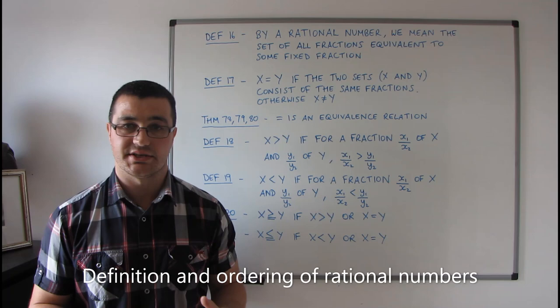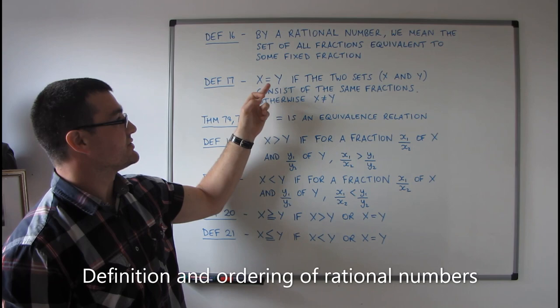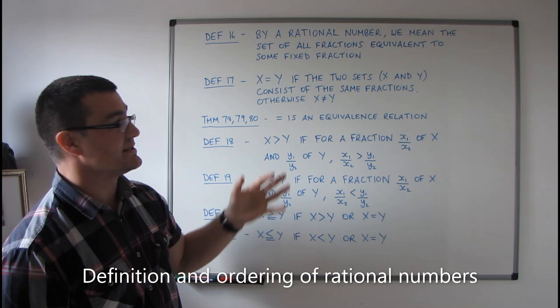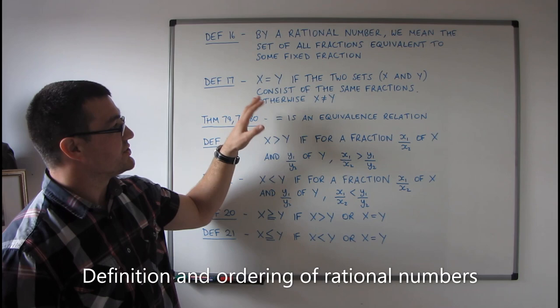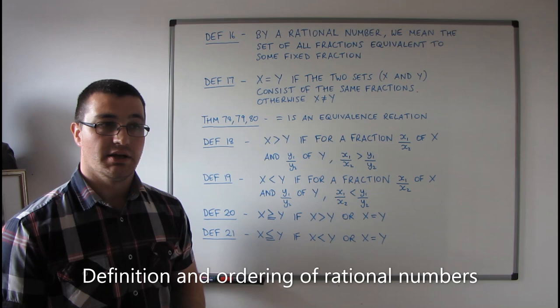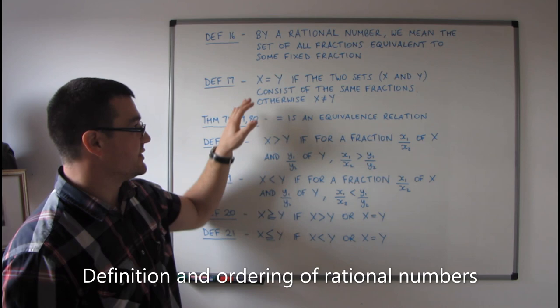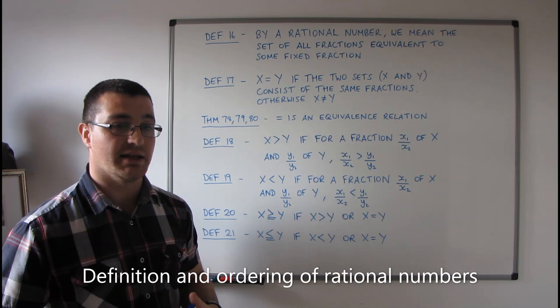Unlike with fractions, where we only had a notion of equivalence, with rational numbers we actually define equality. Definition 17: two rational numbers are equal if the two sets consist of exactly the same fractions, otherwise they're unequal. Rational numbers will, for the most part, be denoted using capital letters, whereas fractions used lowercase letters with subscripts and natural numbers used lowercase letters. There will come a point where we break that convention, but that's quite far down the line.